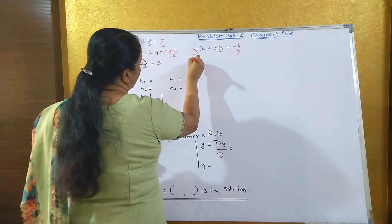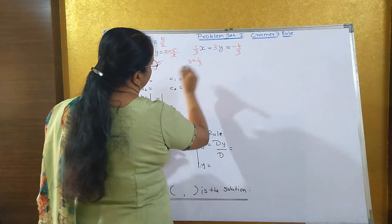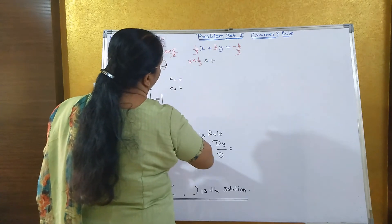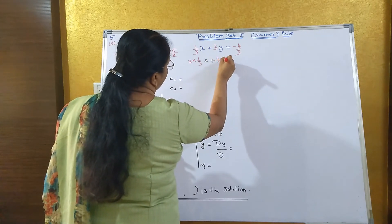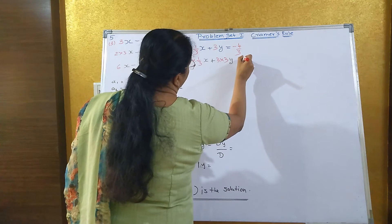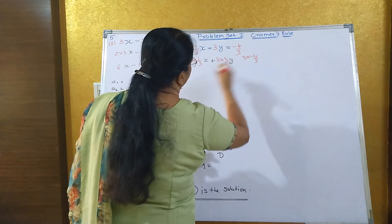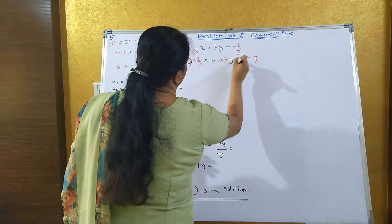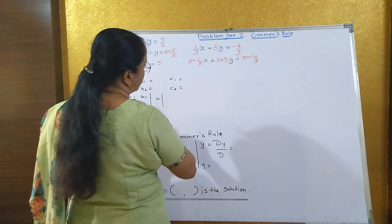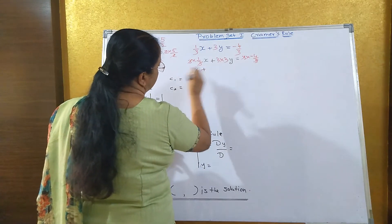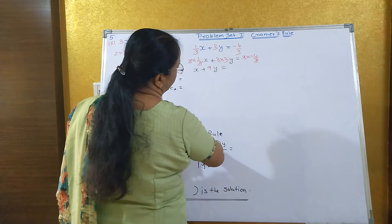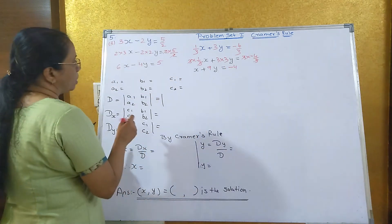Similarly, the second equation has denominator 3, so multiply throughout by 3. 3 into (1/3)x plus 3 into 3y equals 3 into (-4/3). The 3s cancel on both sides, giving the second equation: x plus 9y equals minus 4.